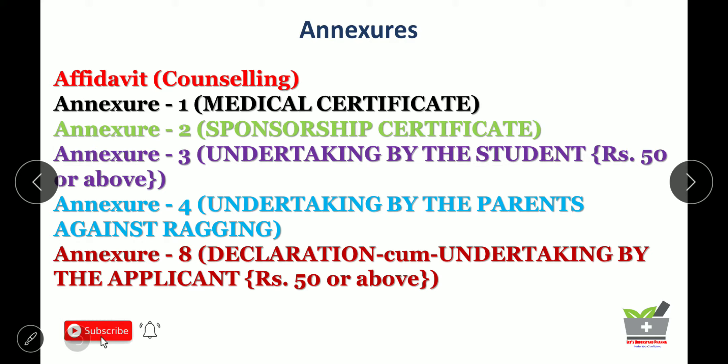Every student who attends counseling will definitely need to submit the affidavit. Now there are some annexures as well: Annexure 1 is the medical certificate, Annexure 2 is the sponsorship certificate for sponsored candidates, Annexure 3 is an undertaking by students, and Annexure 8 is also required. Annexures 2, 3, and 8 need to be on non-judicial stamp paper of rupees 50 or above, whichever is feasible for you.